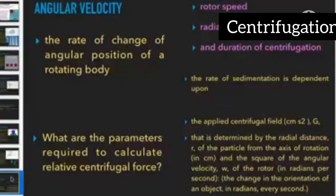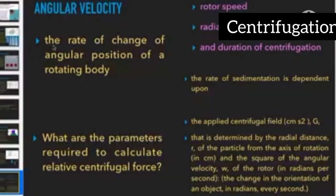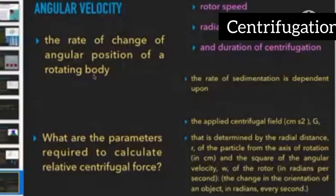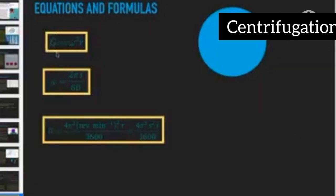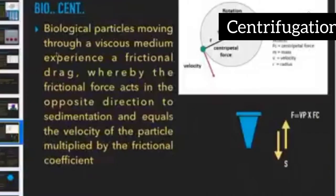Friction force equals velocity of the particle multiplied by the frictional coefficient. Linear velocity is when a particle moves in a straight line. Angular velocity is when a particle moves in a circular path — it is the rate of change of angular position of a rotating body. In this introduction class, we are going to understand centripetal force and centrifugal force, with equations to be derived in a later part.